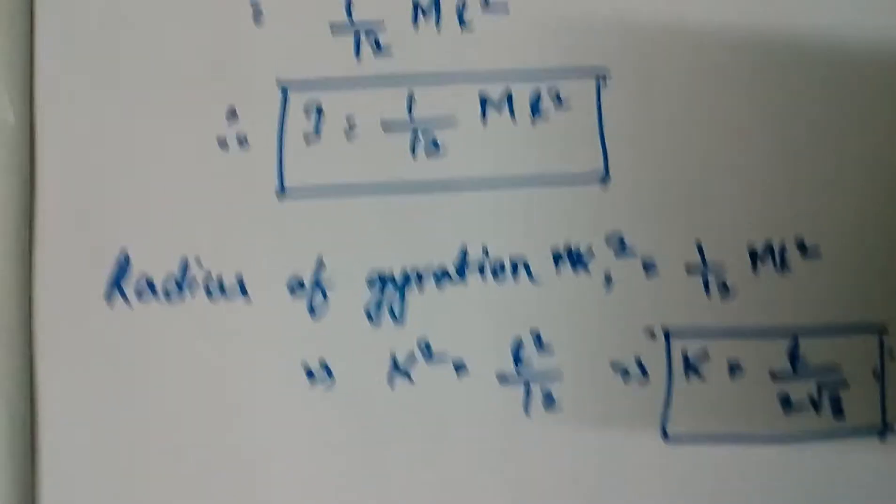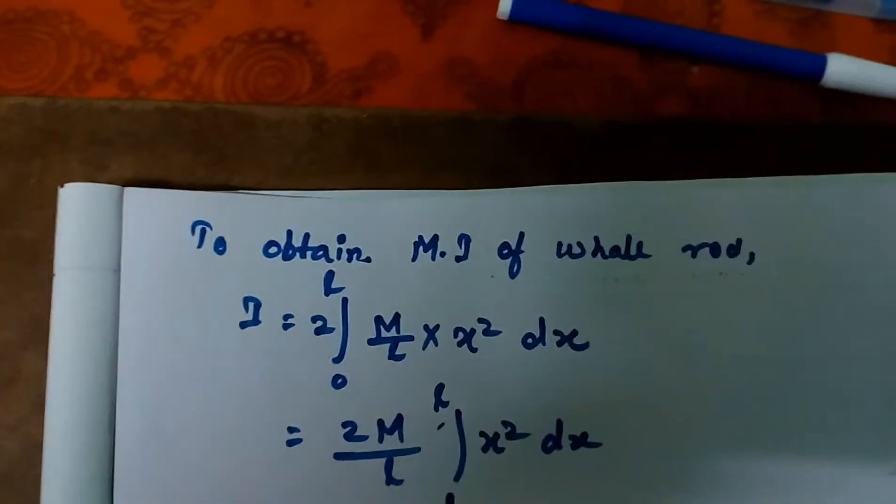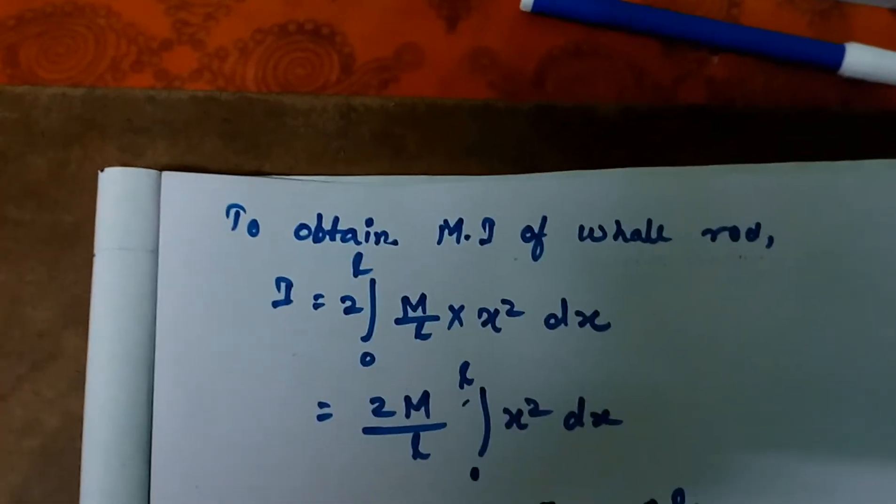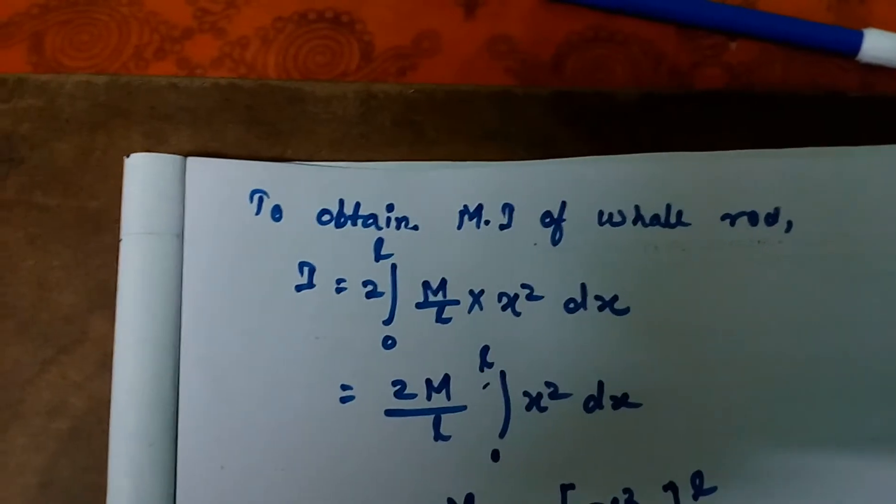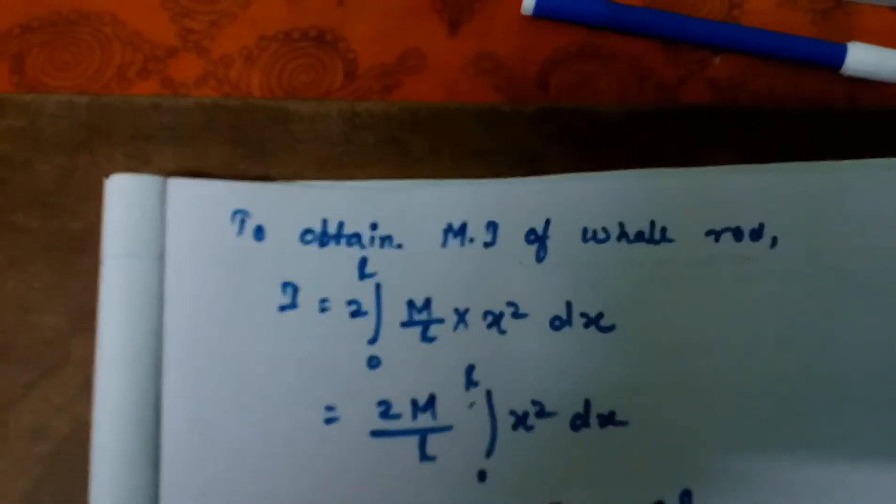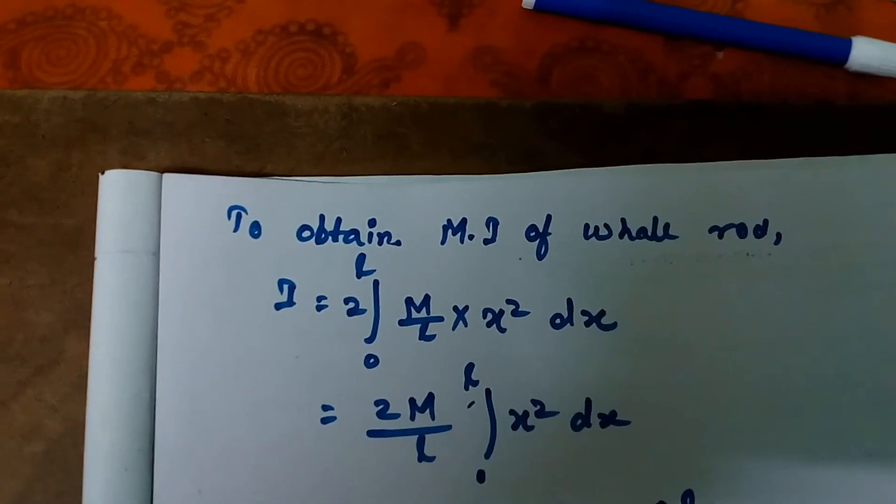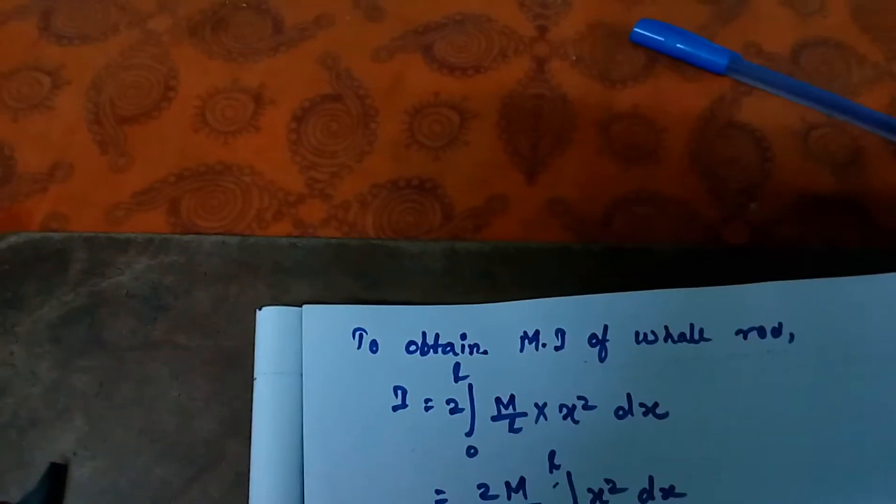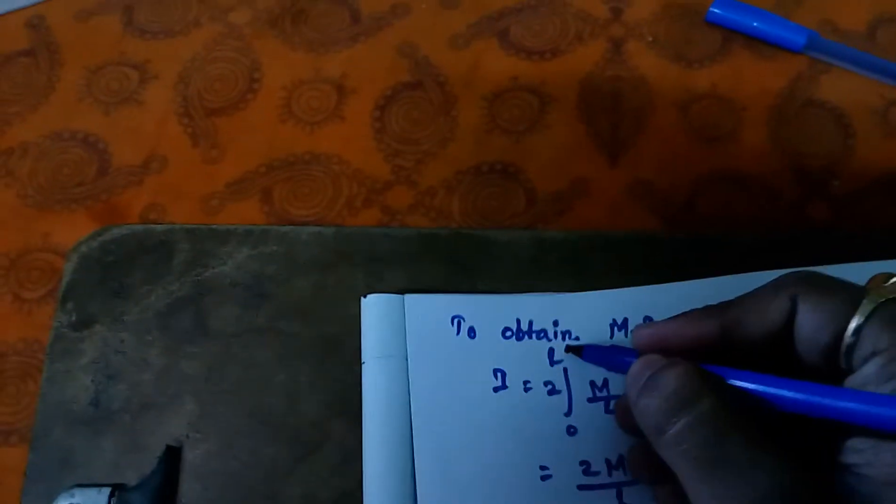Now, our next step is to obtain moment of inertia of the whole rod. We have just calculated the elementary portion. We need to calculate the whole rod. So, what we do here is integrate the elementary portions over a length of L by 2. Sorry, for a mistake here. L by 2.